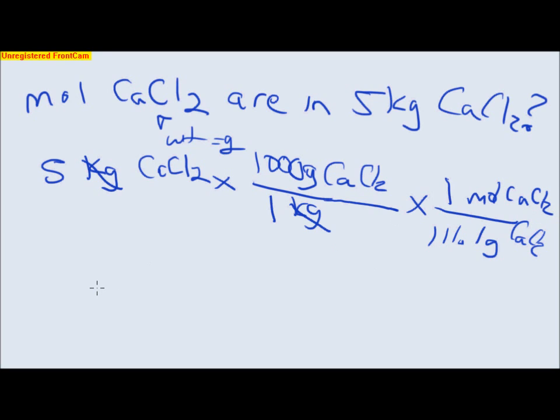So, when we multiply this all out, we find out that there are 45 moles in 5 kilograms of CaCl2.